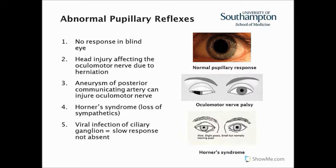Number three is an aneurysm of the posterior communicating artery. If the aneurysm was putting compression on the ocular motor nerve, we might expect not to see a normal response in the eye we're shining the light into. We might expect to see a consensual response — again it depends on the level of compression.